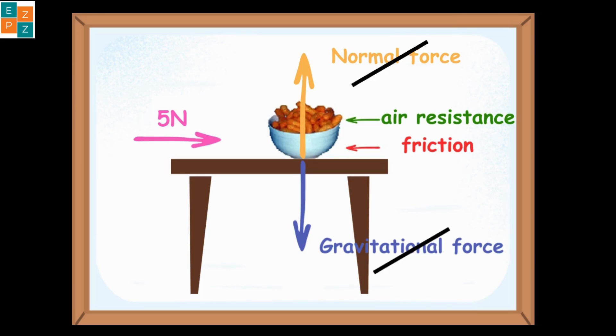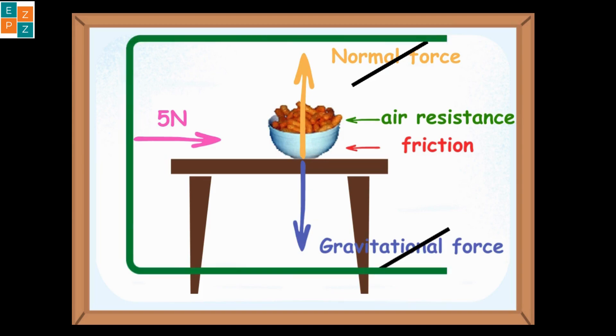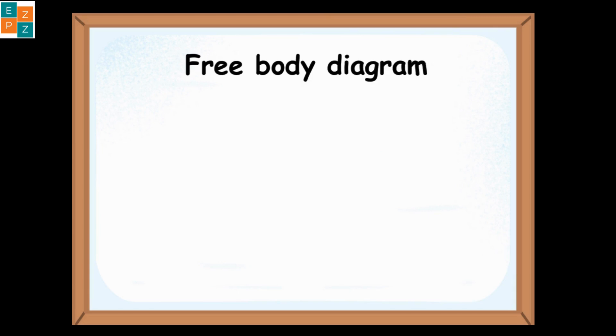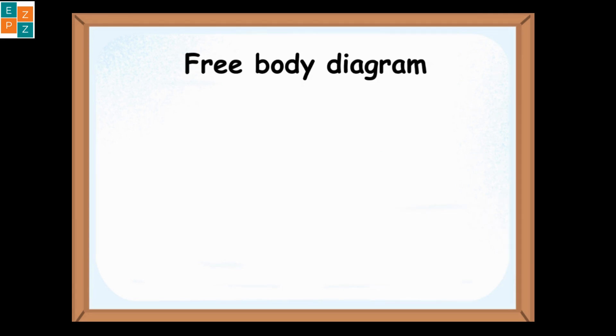Also, notice the size of the arrows. If the magnitude is more, the size of the arrow is also larger. We can represent all these external forces on an object using a free body diagram. A free body diagram visually represents all the forces acting on an object.